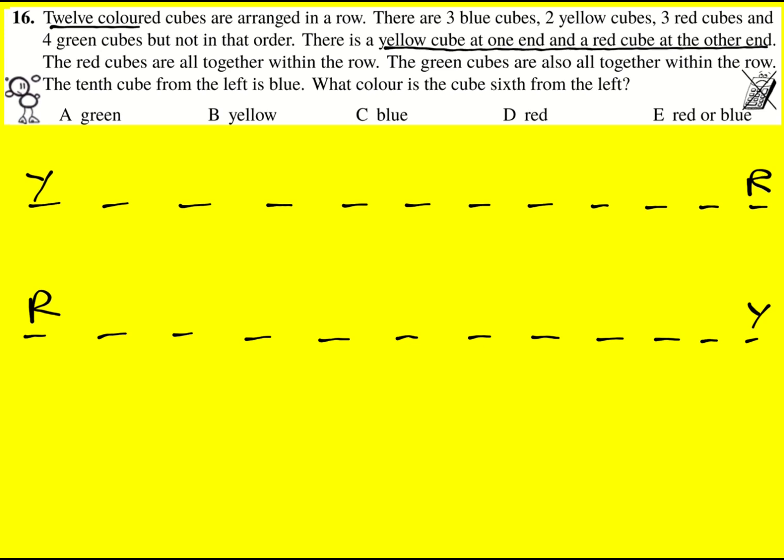Next up, we're told that the red cubes are all together within the row. So we've got three of them, they must be like this, or like this.